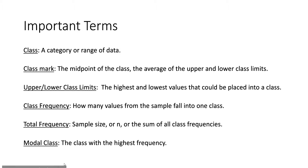First we'll talk about some important terms. A class is a category or range of data. Class mark is the midpoint of a class, or the average of the upper and lower class limits. The upper and lower class limits are the highest and lowest values that can be placed into a class. Class frequency is how many values from the sample fall into one class. Total frequency is the sample size, or n, or the sum of all of the class frequencies. The modal class is the class with the highest frequency.